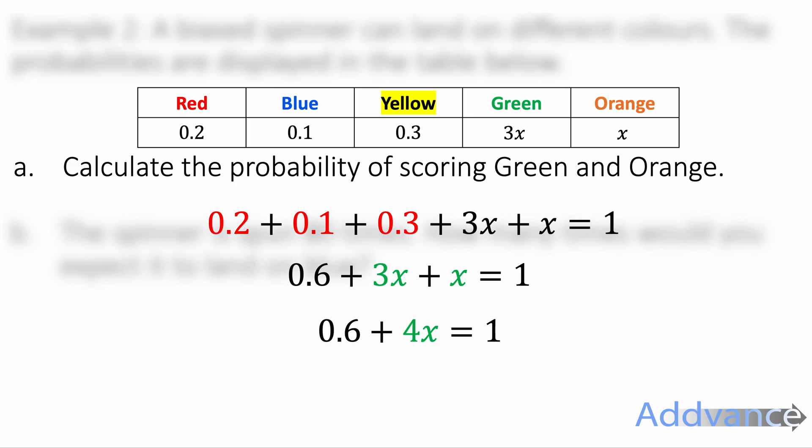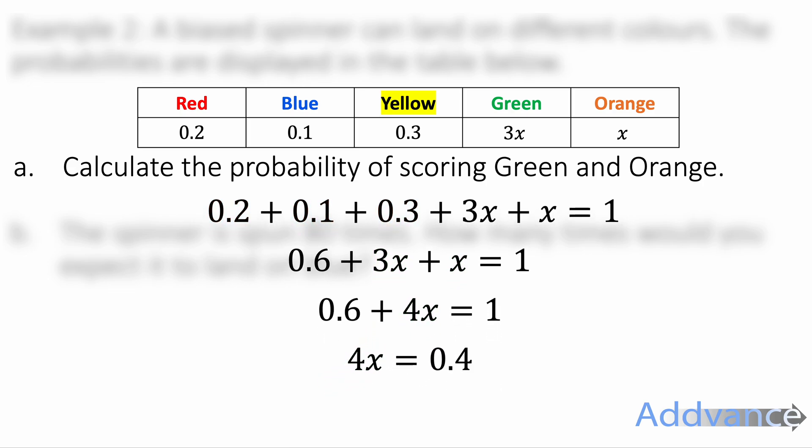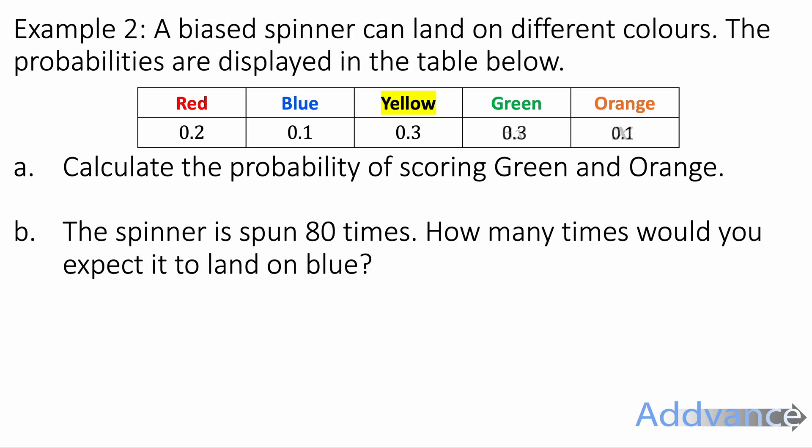We need to get rid of 0.6 by moving it to the other side, so we subtract. 1 minus 0.6 is 0.4. And so we've got 4x is equal to 0.4. We divide by 4, we get x is equal to 0.1. And therefore 3x will be 3 times bigger, will be 0.3. We now know the probability of green is 0.3 and the probability of orange is 0.1. So we replace those numbers in the table here.